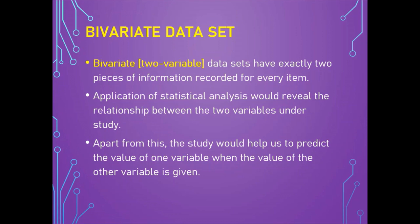Using regression analysis, we can estimate the cost of producing an item if we know the number of units to be produced, and vice versa. Another example: a table comprising the date and corresponding market share price of a firm recorded every day for the past one year. The relationship between price and time implies recent trends in the value of investment. The date and share price are the two variables constituting the bivariate dataset.